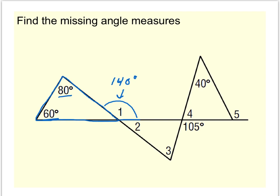Angle 2 forms a linear pair with angle 1, and so that means angle 2 must be equal to 40 degrees, since 40 plus 140 adds up to 180 degrees.